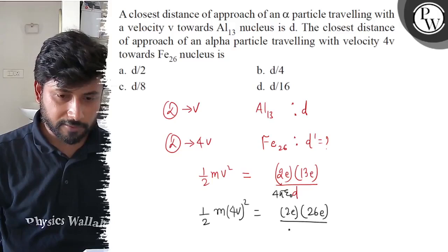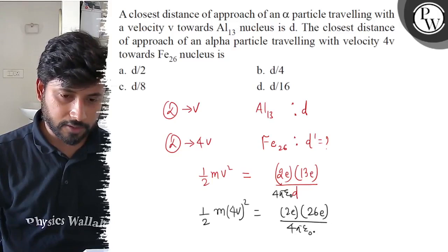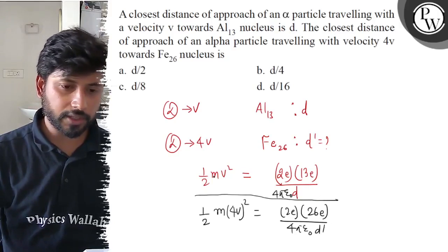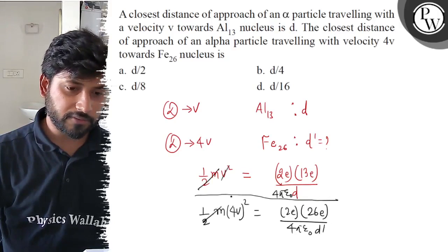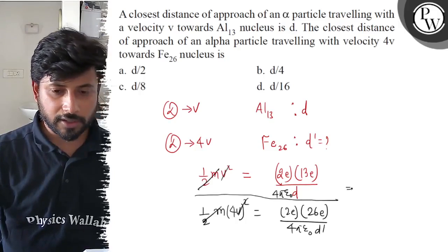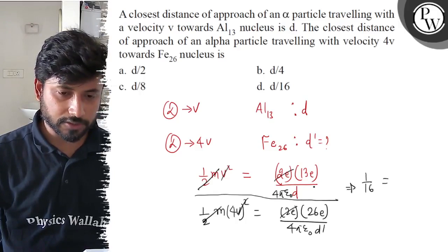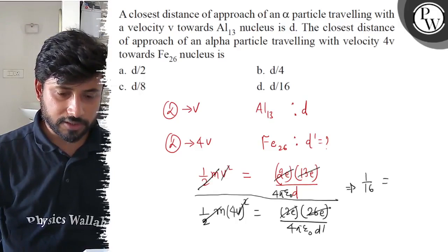Taking the ratio of both equations: m/2 and m/2 cancel, V² and V² cancel. On the left-hand side we get 1/16, and on the right-hand side, the 2ε₀ terms cancel.